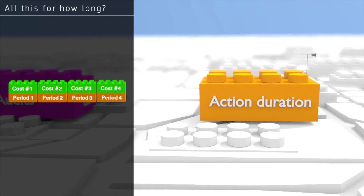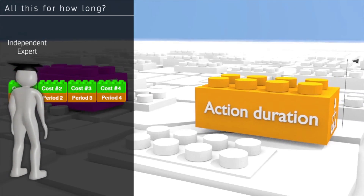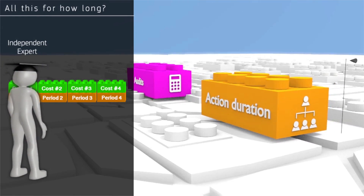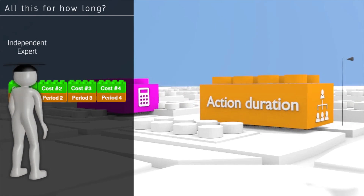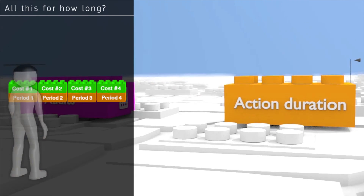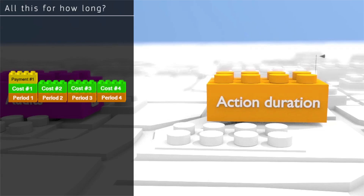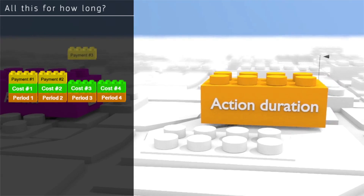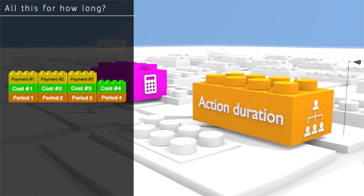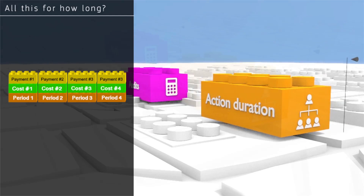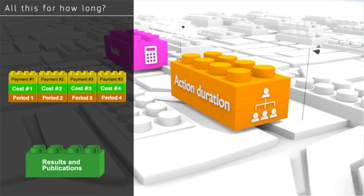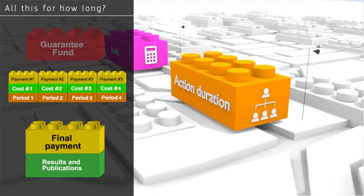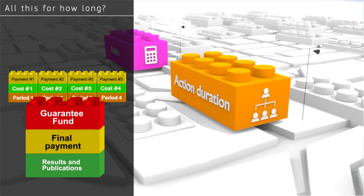The EU conducts a review using independent experts, if required, to ensure that all agreed deliverables have been provided to the standards agreed in the grant agreement. If this is the case, the consortium is paid for the period, and this process continues for each period until the project is completed. At the end of the grant, the consortium submits a final report including results and publications, if any, and then the final payment is calculated, including the money placed in the guarantee fund.